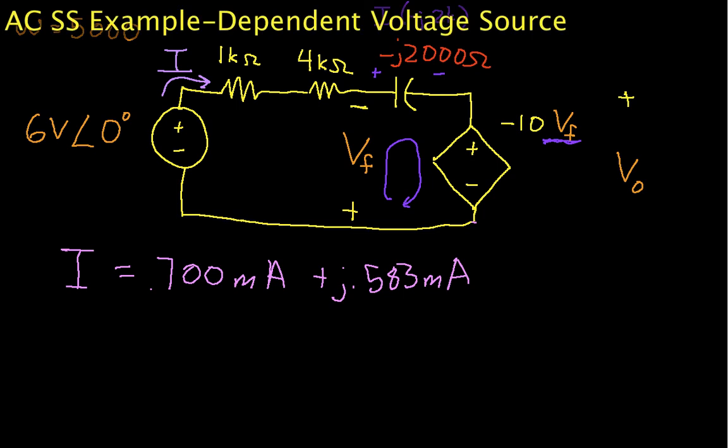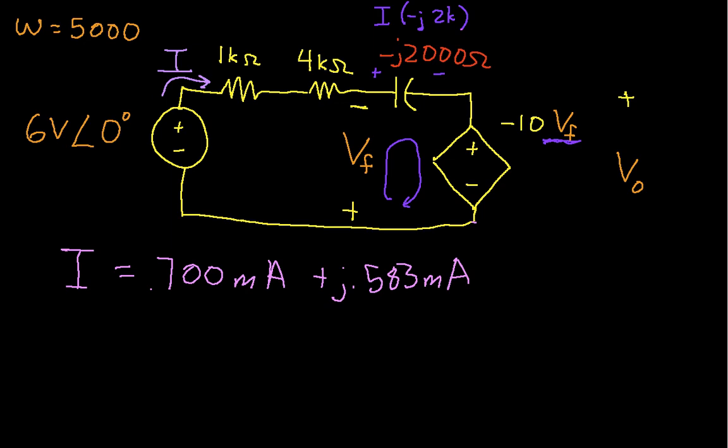Welcome to part 2 of this video in which we are computing the output voltage of a simple circuit that has a dependent voltage source. This is a single loop circuit, and as we showed in part 1, the analysis is conceptually pretty simple.